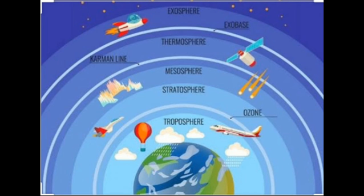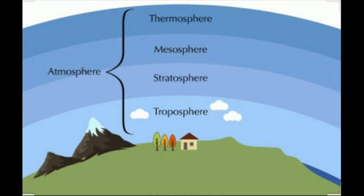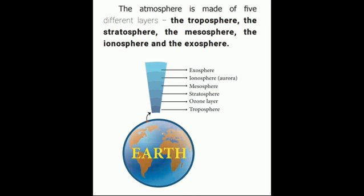The atmosphere is made of five different layers: the troposphere, the stratosphere, the mesosphere, the ionosphere, and the exosphere.